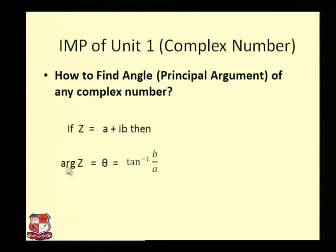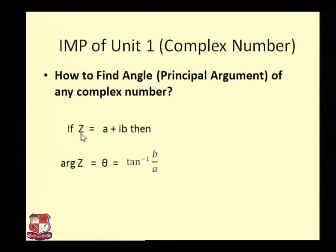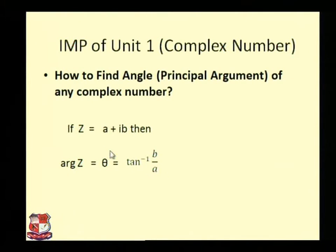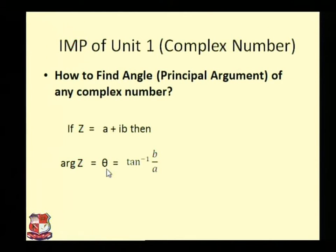Today we are discussing how to find the angle of any complex number. Our today's session starts with this formula: if z = a + ib, then the argument of z — that is, the angle — is tan inverse of b by a. Here b is the value represented with i, and a is the value not represented with i. So finally, θ = tan⁻¹(b/a).